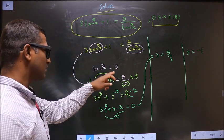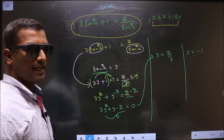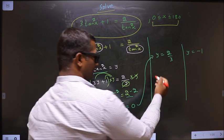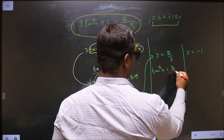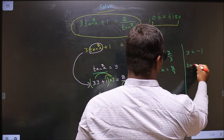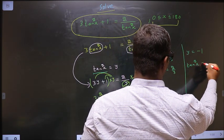Now replace y by tan square x. So tan square x equal to 2 by 3, tan square x equal to minus 1.